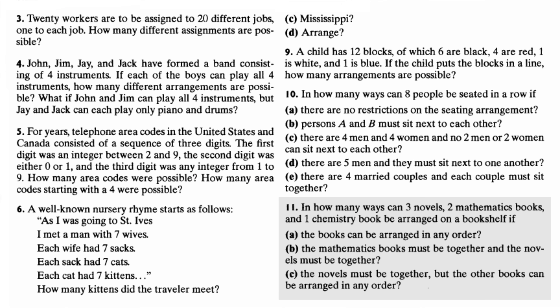So in this problem, we have six books: three novels, two mathematics books, and one chemistry book. The goal is to look at the number of ways you can order them on a bookshelf. In the first question, there is no restriction. In the second question, we assume that books in the same topic must be together. And in the third question, we assume that only the novels must be together.